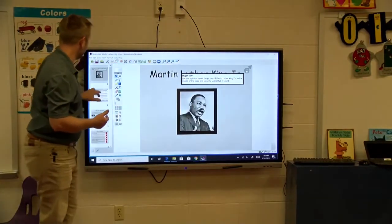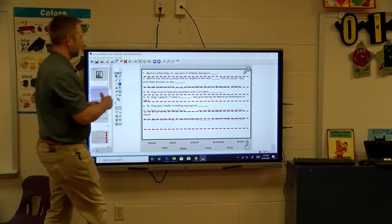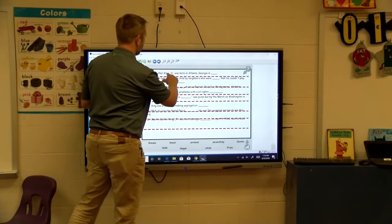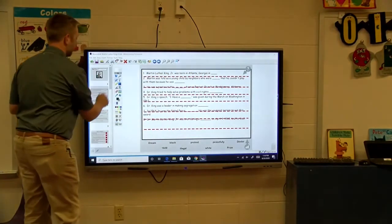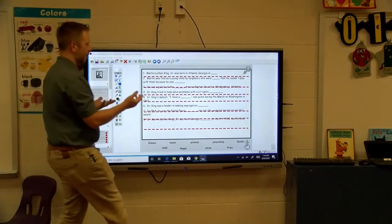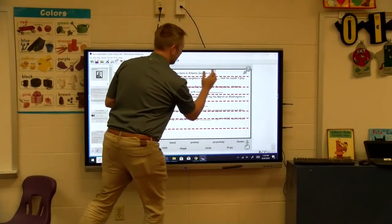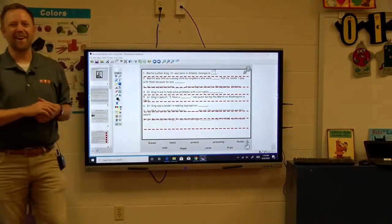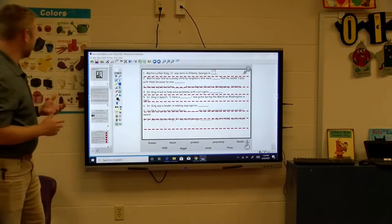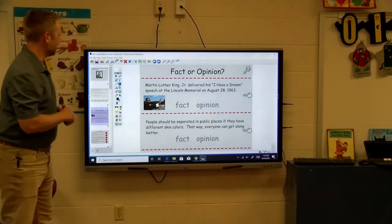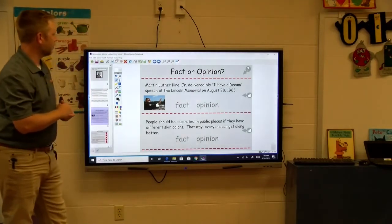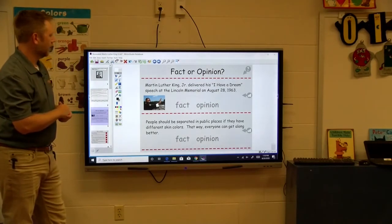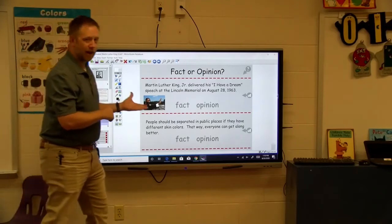Martin Luther King Jr. was born in Atlanta, Georgia in blank. So now I get it to come up with my pen tool. I don't know the answer to this. I know it's going to be 19-something, right? I can actually have them go up to the board and write on it. Fact or opinion. Martin Luther King Jr. delivered his I Have a Dream speech at the Lincoln Memorial on August 28, 1963. Is that a fact or is that an opinion? I think it's a fact.